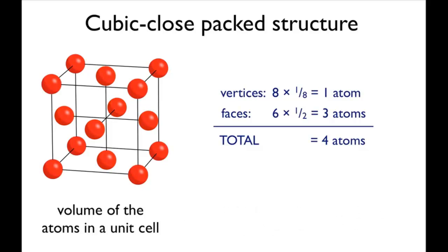Therefore, the volume of the atoms in the unit cell is equal to four times four thirds pi r cubed, or sixteen over three times pi r cubed.